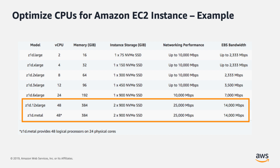With that, the customer should not be able to use the Amazon EC2 Z1D.12xlarge instance due to the vCPU count exceeding what the Enterprise Agreement covers. An option is to turn off 16 vCPUs using Amazon EC2 optimized CPUs, becoming compliant with the license while still achieving the technical requirements.